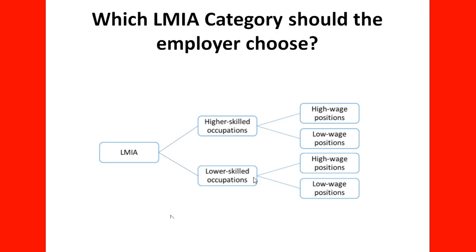LMIA has two main categories: higher skilled occupations and lower skilled occupations. Higher skilled occupations can include high wage and low wage positions, and the same applies to lower skilled occupations. The wage designation is determined based on the market, provincial information — normally through the job bank — and the position requirements. The skill level designation depends on the occupation and its requirements, and these categories must be determined before making an LMIA application.